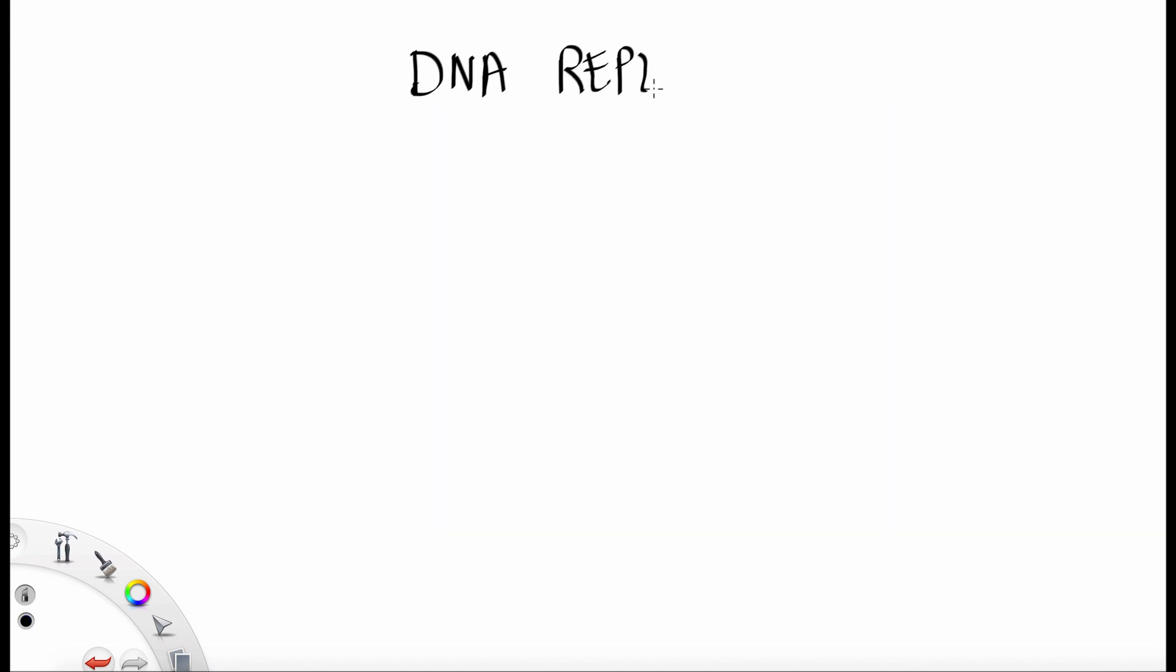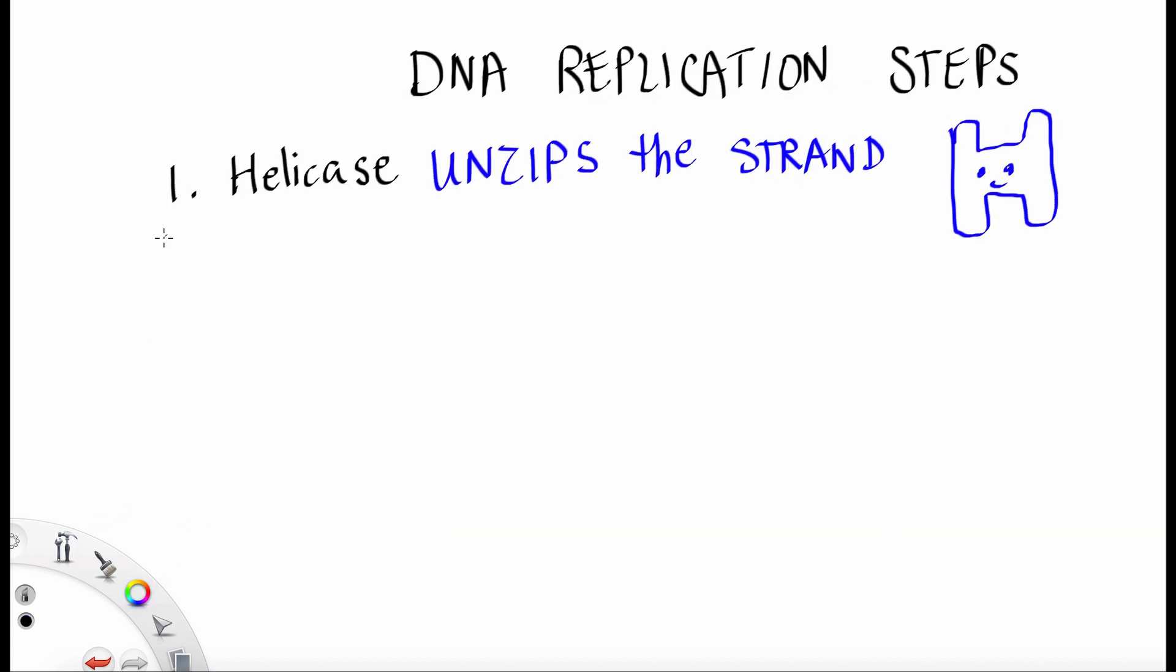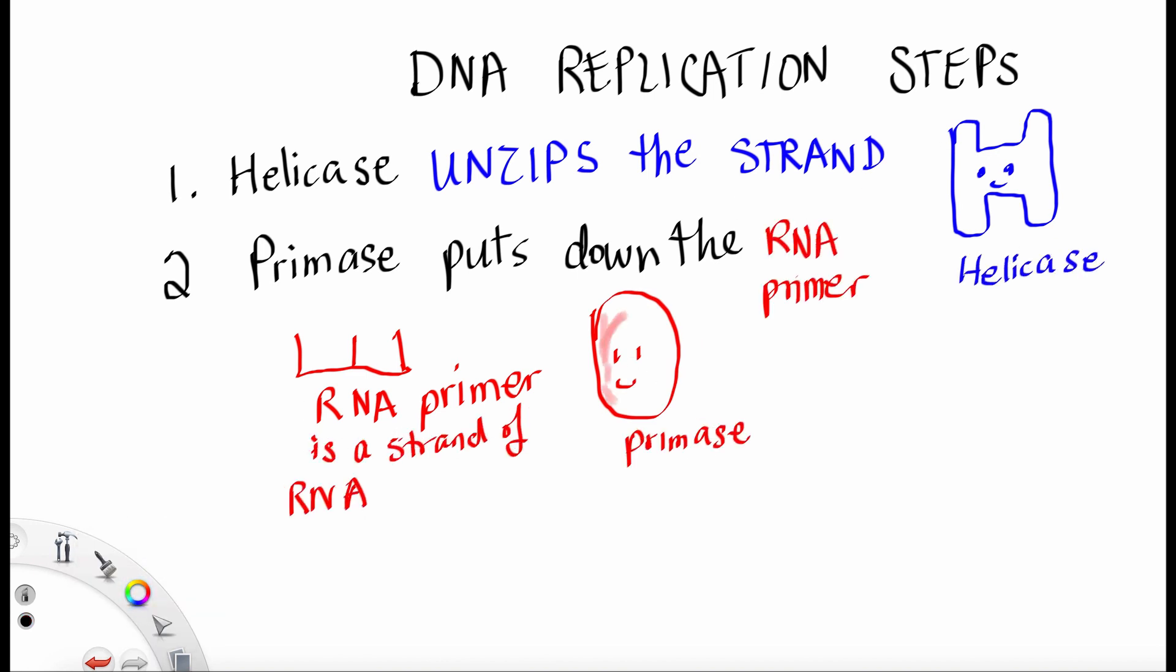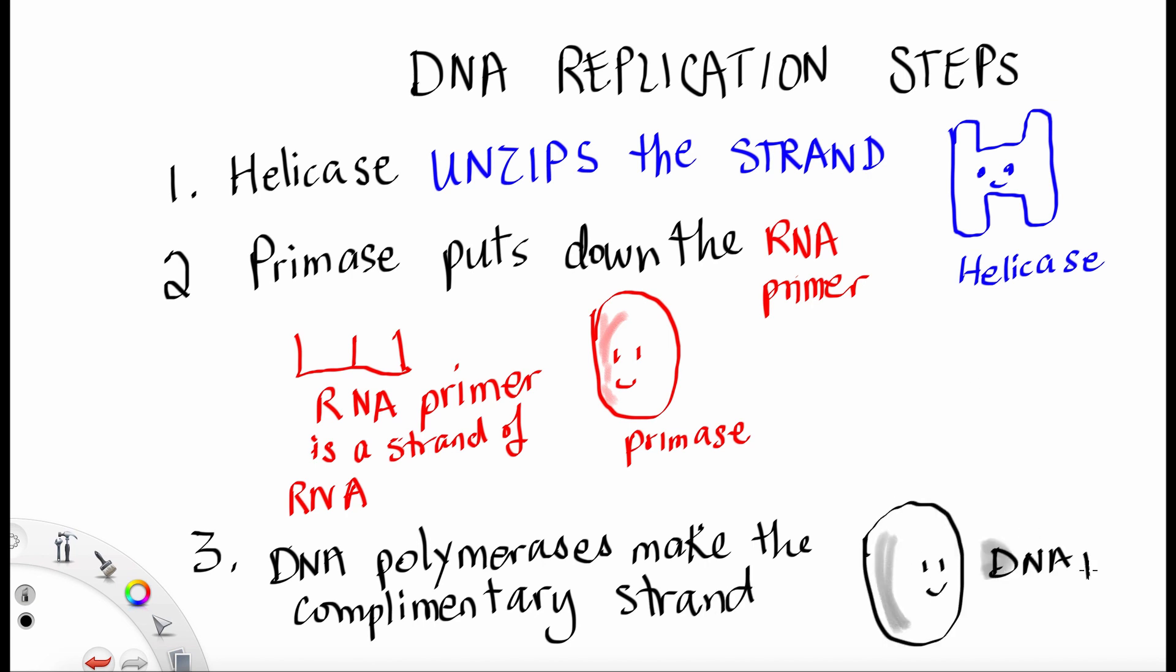Here we go. So DNA replication, the steps are: number one, helicase unzips the strand, and primase puts down the RNA primer as a strand of RNA, and DNA polymerase makes the complementary strand.